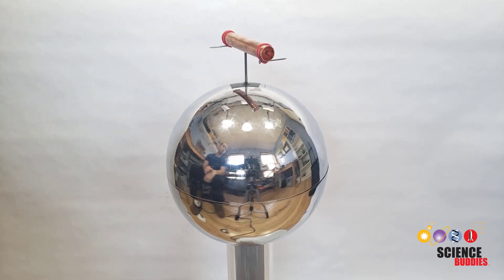Balance the pipe on top of the nail and when you turn the Van de Graaff generator on, the rotor should start spinning on its own.